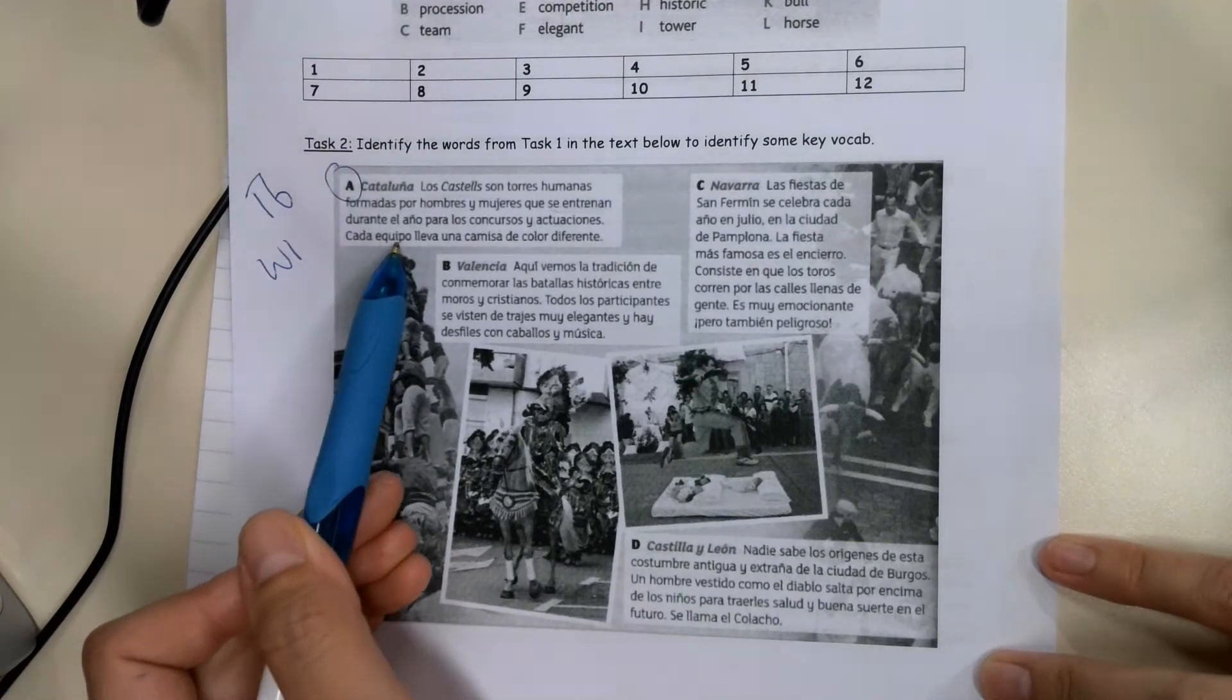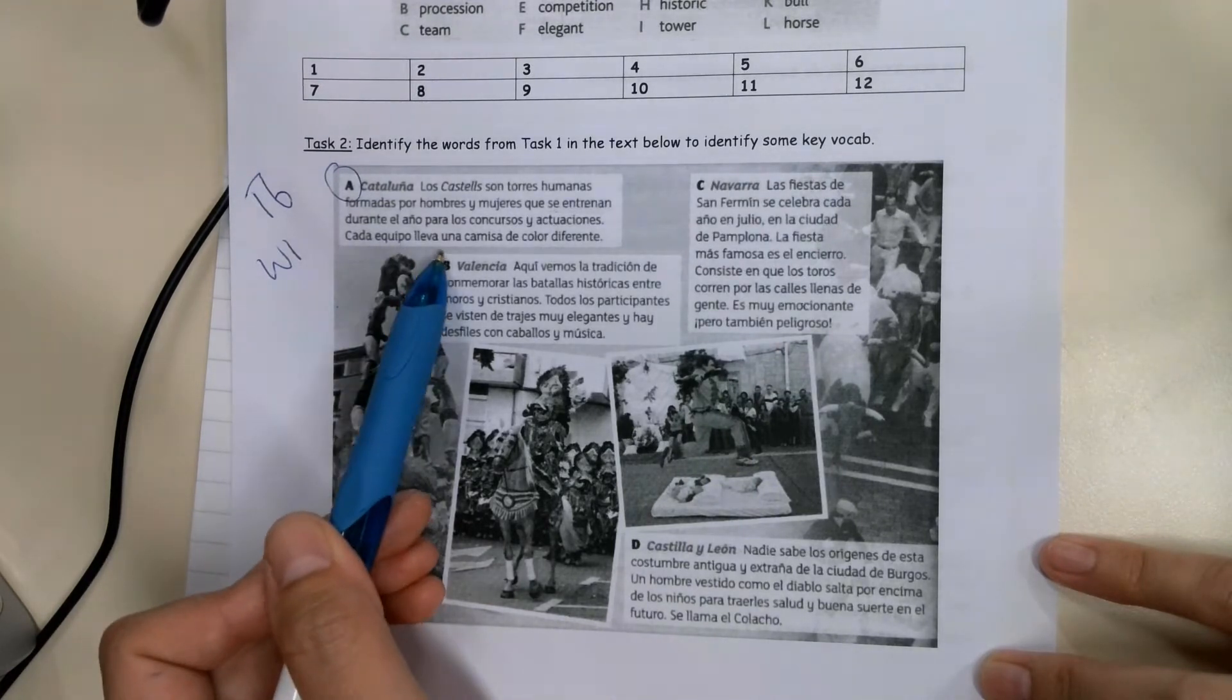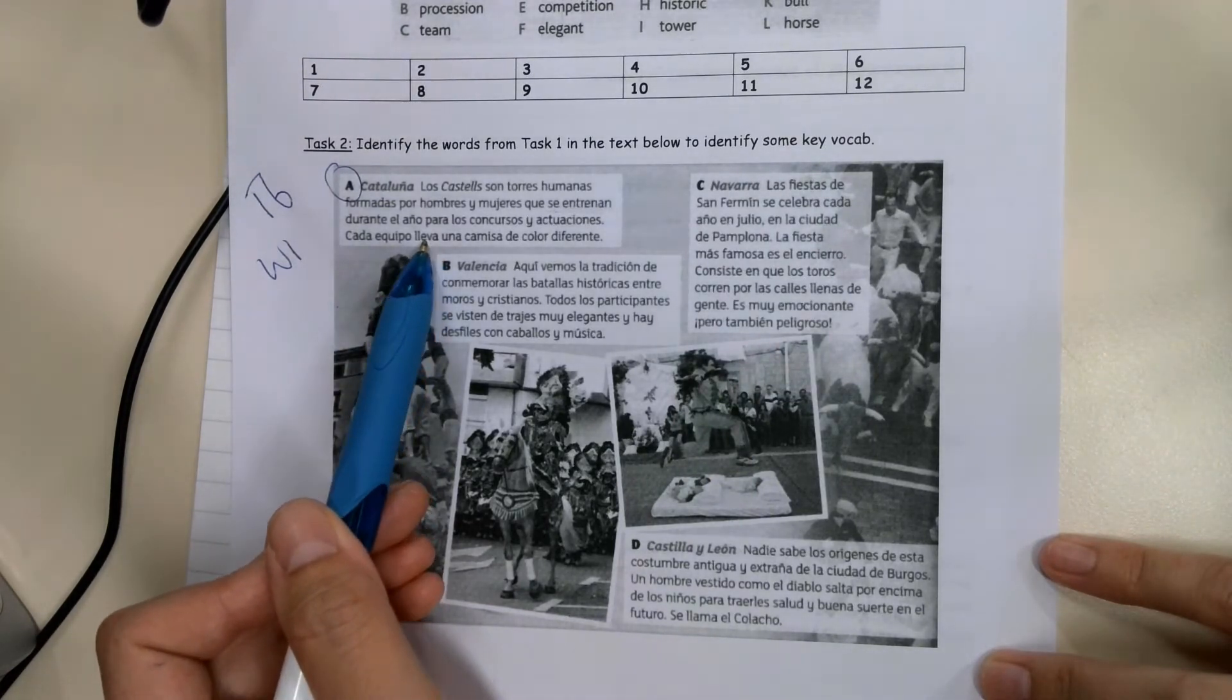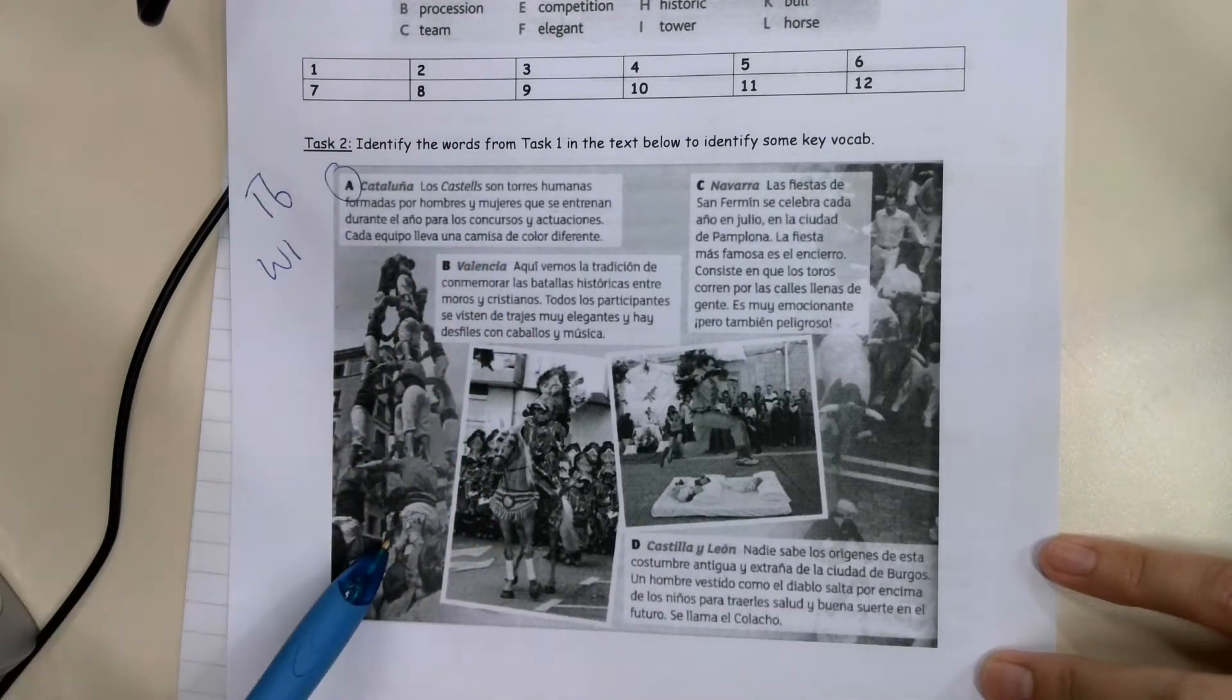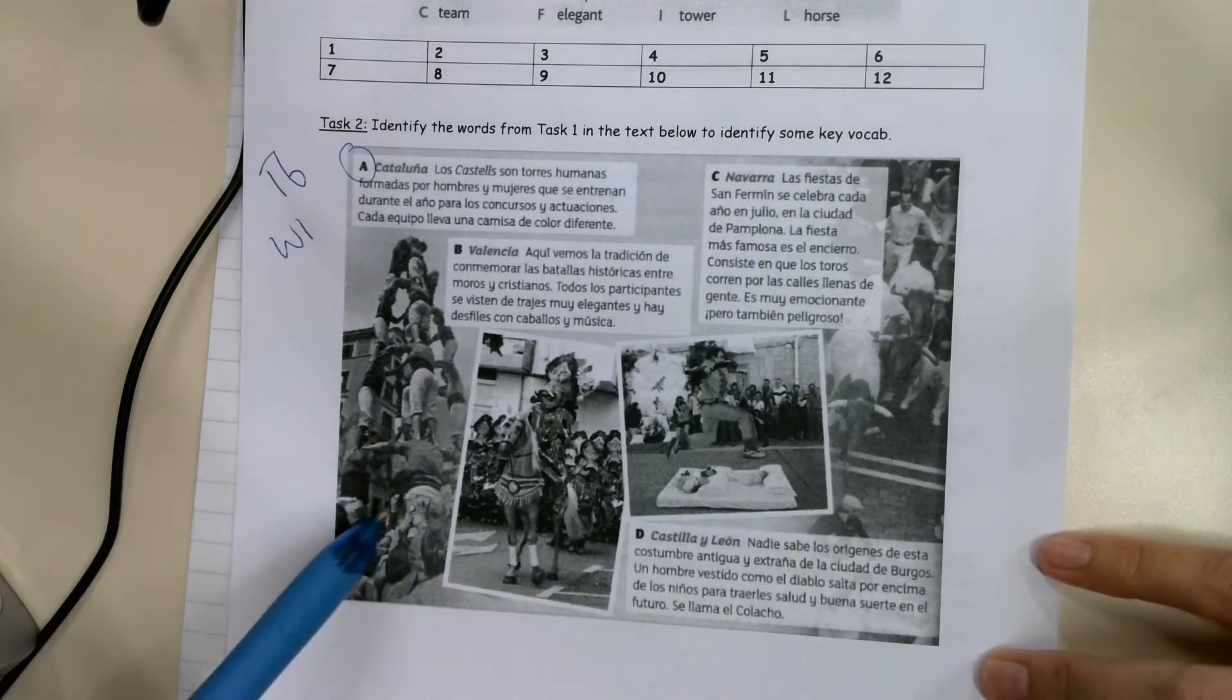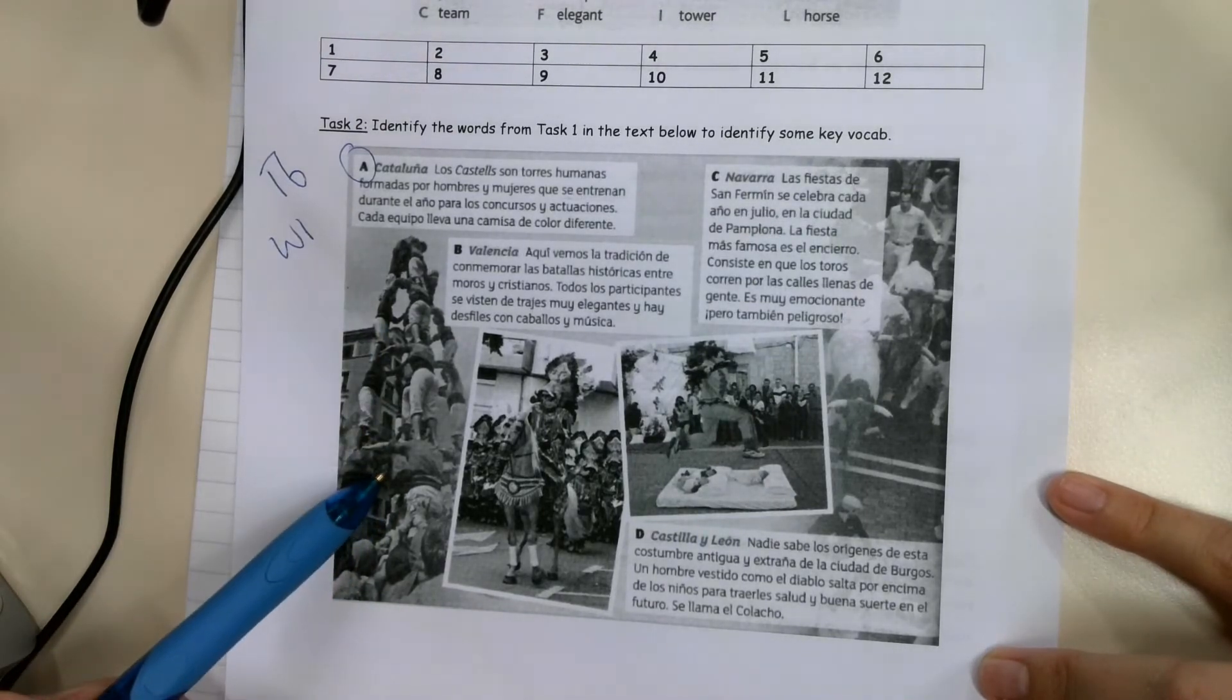Each team wears a shirt of a different color. So what they'll do is all of them will try and build their towers, each team has their different color, so you can see who is in which team. They have shows and competitions with that in Catalonia.